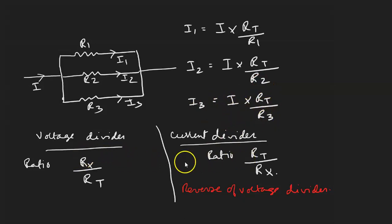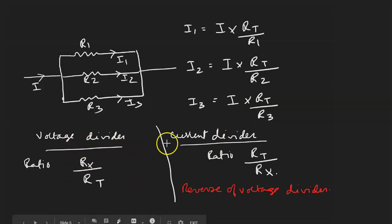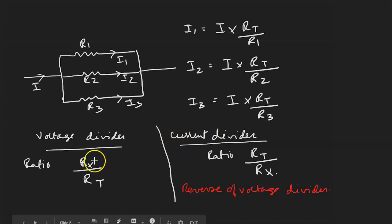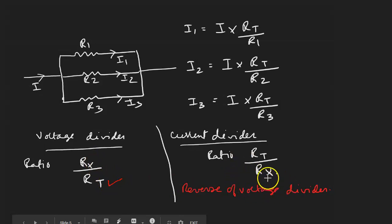This is the difference between the voltage divider and the current divider, and it is very easy to remember. In the voltage divider, the total resistance is in the denominator, whereas in the current divider the total resistance is in the numerator.